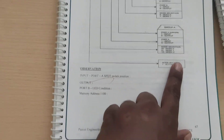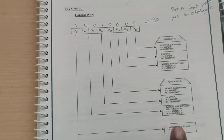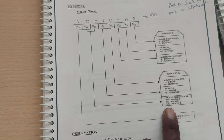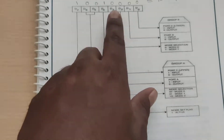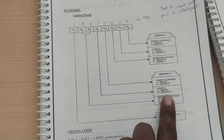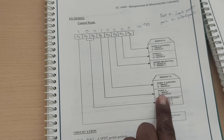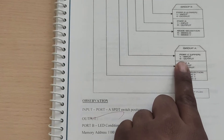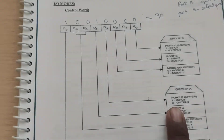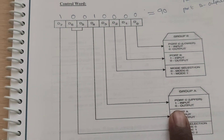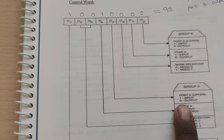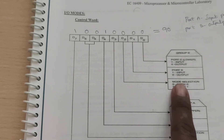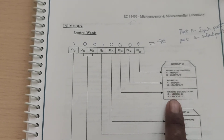For the control word: mode bits 00 mean mode 0, 01 means mode 1, and 10 means mode 2. D4 equal to 1 means port A is input; D4 equal to 0 means port A is output. D3 equal to 0 means port C output; D3 equal to 1 means port C input. D2 equal to 0 selects mode 0; D2 equal to 1 selects mode 1 for group B.